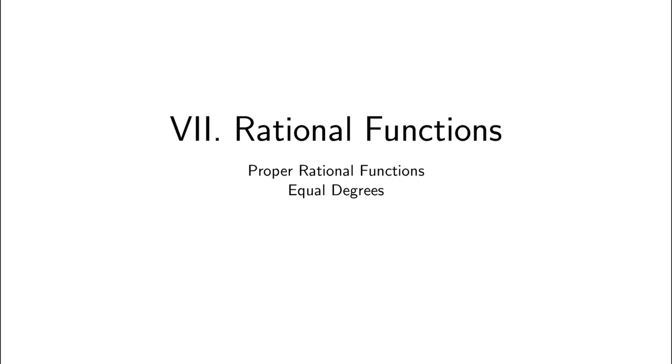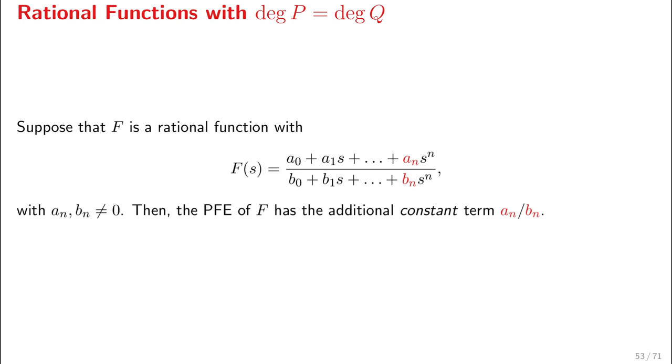Now next, the next topic is: what happens if we don't have strictly proper rational functions? If we just have proper ones where the numerator and the denominator have equal degrees. This is something we haven't examined so far.